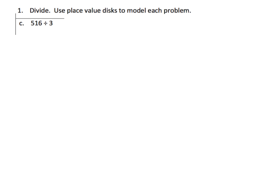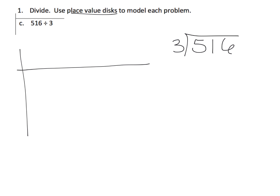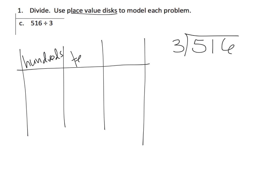Here they're asking us to use the place value method to model this problem. Numerically it would look like 516 divided by 3, but we're going to use the place value method symbols. This is the hundreds column, this is the tens column, and this is the ones column. Teachers, I always make my students label these themselves — I never give them a pre-filled out chart. The first thing we need to do is model 516: that's 5 hundreds, 1 ten, and 6 ones. I'm using the 10-frame style, putting them in groups of 5 to make a 10-frame.